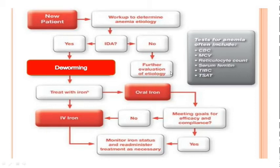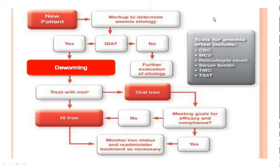The most important diagnostic tests are CBC and MCV. Then reticulocyte count for any anemia — we definitely need to do reticulocyte count to rule out hemolytic anemia. Then serum ferritin, TIBC, and transferrin saturation (TSAT). When you test for iron deficiency anemia, mostly all will be in the lower range except for the TIBC, which will be in a higher range.